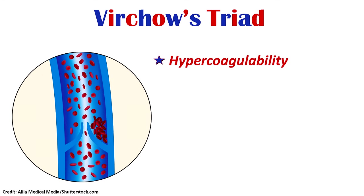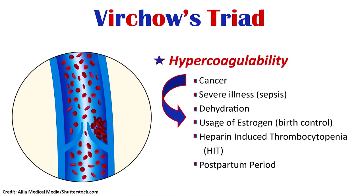Then we have hypercoagulability. As the name says, hyper means high or increased; coag deals with the coagulation of our blood. So something in this patient's body is causing their blood to have a high risk of clotting. This is usually due to a disease process presenting in the patient's body, or it can be due to other reasons. For instance, cancer can cause this, as can severe illnesses like sepsis or septic shock. Also dehydration, use of estrogen or birth control pills, heparin-induced thrombocytopenia, and the postpartum period after a woman has a baby.